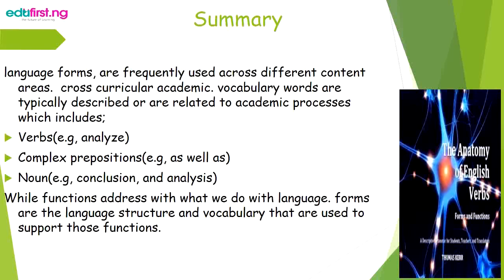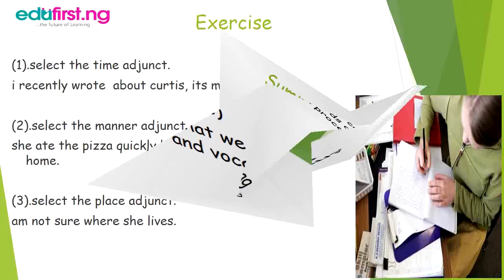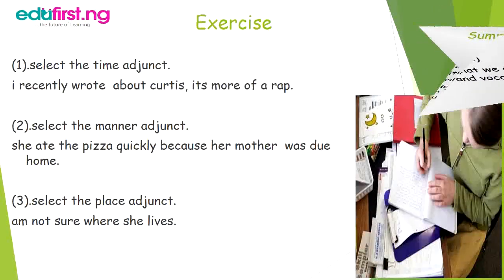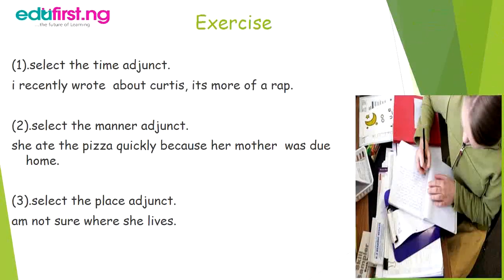Exercise: Select the time adjunct — 'I recently wrote about cultures.' Select the manner adjunct — 'She ate the pizza quickly because her mother was due home.' Select the place adjunct — 'I'm not sure where her mother was born.'